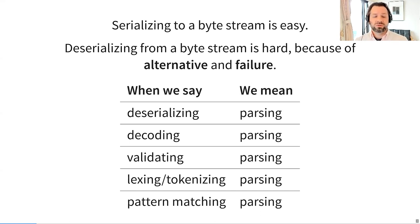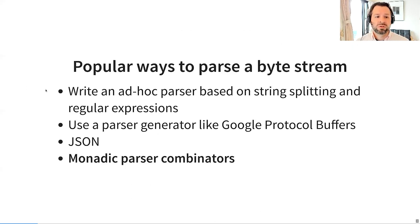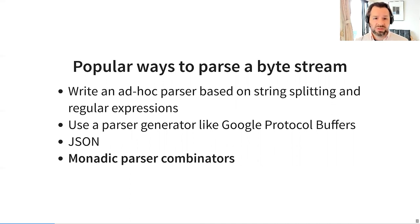We will be talking mostly about Unicode strings, but everything in this talk will generalize to any kind of byte stream. In the year 2022, here are some common methods for parsing an input byte stream. Write an ad hoc parser based on string splitting and regular expressions — this is how we end up writing a process which misbehaves on surprises, making it easy to forget to handle certain cases. Use a parser generator like Google Protocol Buffers — this works great as long as the input is in that format, but that is often not true.